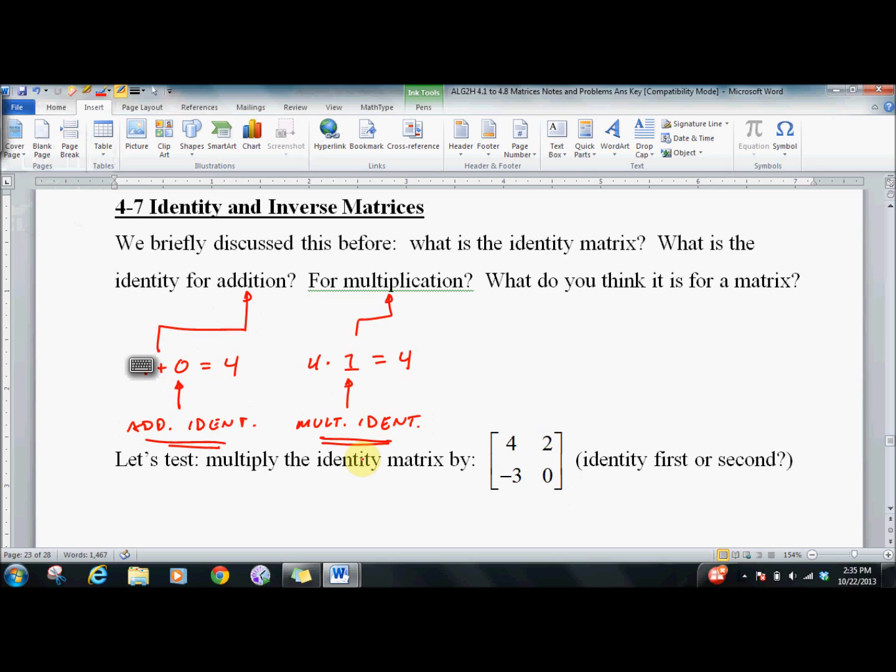Now, when we talk about a matrix identity, we talk about the multiplicative identity, because for addition, it's just a 0 matrix: 0, 0, 0, 0. But it's confusing for matrix multiplication. It's a very different animal. It's got different rules.